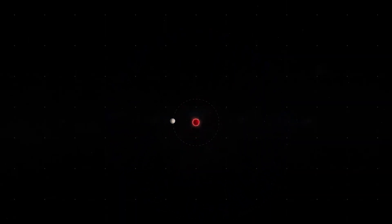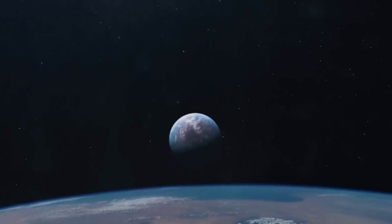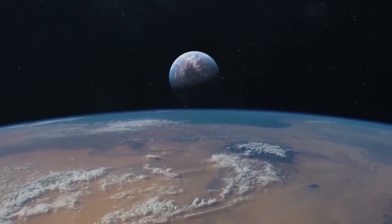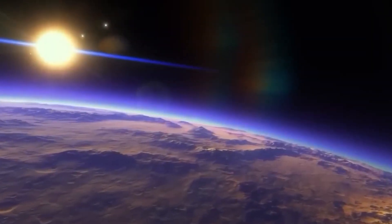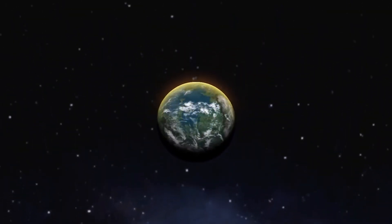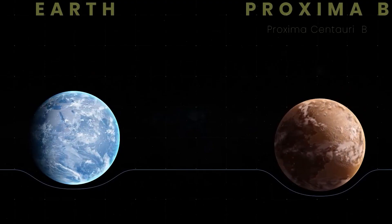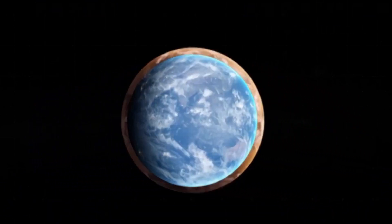As mentioned earlier, Proxima Centauri b is located within the classical habitable zone of its star. It is also exposed to about 65% of Earth's irradiation, which in real terms is a lot. That being said, can an atmosphere be sustained under such conditions, and why not?